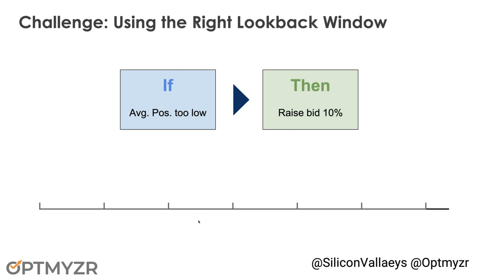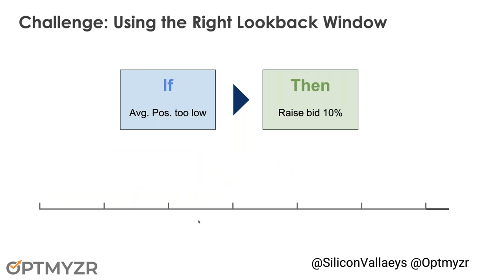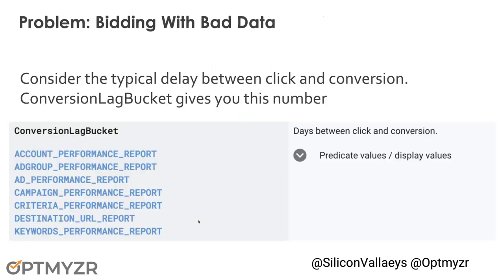Another thing I see people do incorrectly in bid management is overbidding by stacking bids. If you have a rule — say if my average position is too low then raise my bid — and you're looking at three weeks of data to figure out your average position, then next week you run the same automation looking back at three weeks of data: there's only one week with the new bid and two weeks with the old bid, so your averages are not actually correct. If you decide to raise your bid by 10%, you might actually be over-allocating because you should have looked at just the last week of data since you changed your bid. Make sure the frequency of your automation is in sync with the lookback window you're using to make your decisions.